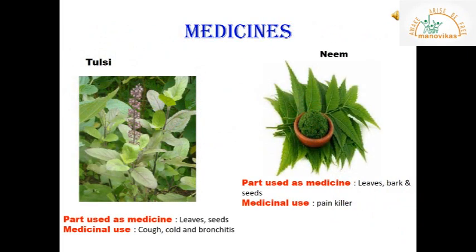Many plants have medicinal properties. Plants such as tulsi, mint, neem and turmeric can be used as medicines. The leaves and seeds of the tulsi plant are used as medicine — they are used to cure cough, cold and bronchitis.